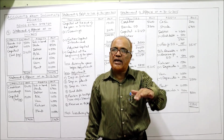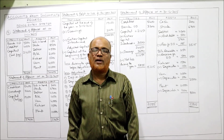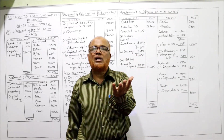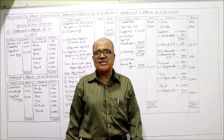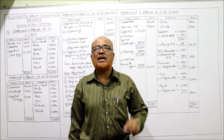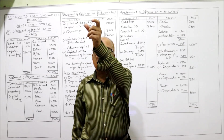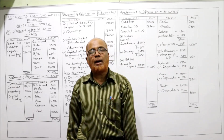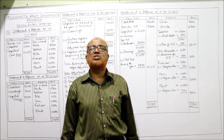Balance sheet will not be prepared by organizations following single entry system. Instead, a statement is prepared called the statement of affairs. The difference is that a balance sheet is prepared by organizations applying double entry to show financial position, while a statement of affairs is prepared to find out capital. Capital equals total assets minus total liabilities.